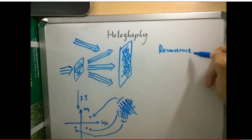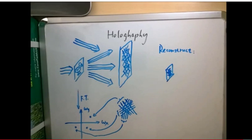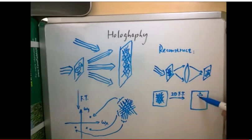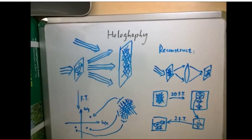To reconstruct the image, we can either use a plane wave to illuminate the holography film, or we can do two-dimensional Fourier transform for the film, extract a sideband, and do inverse Fourier transform.